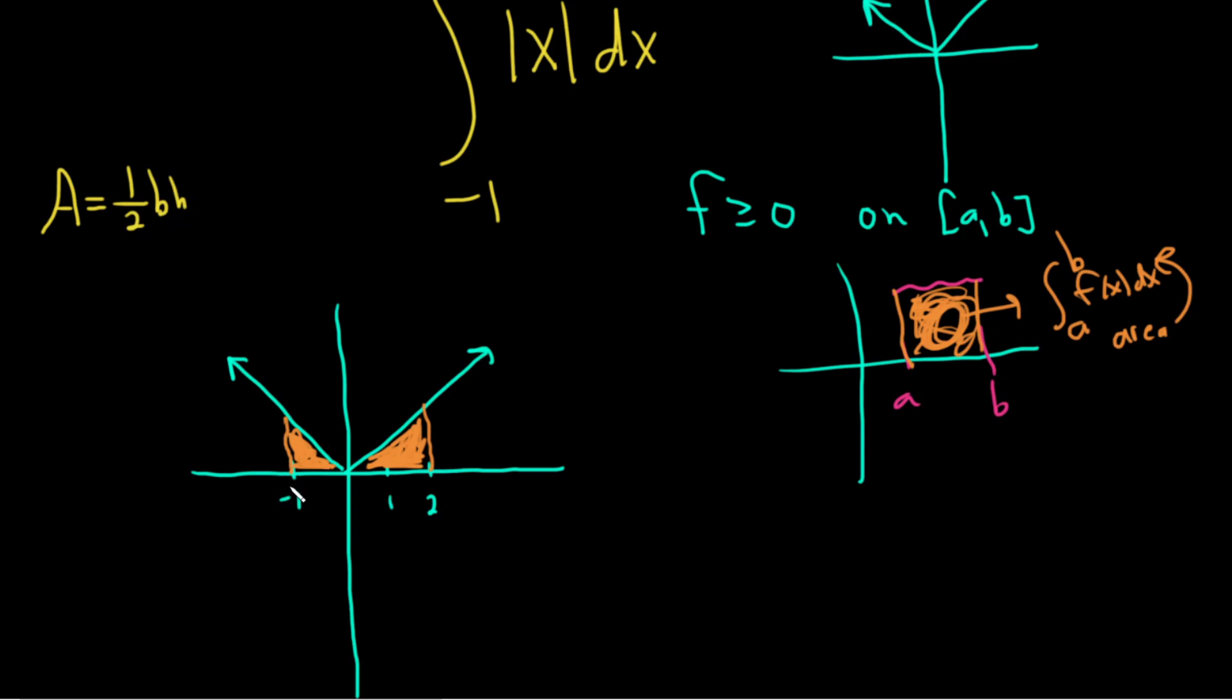So for this first triangle over here on the left, the base is simply one, and the height is also one. So it will be one-half times one times one, which is just one-half. So this area here of this little triangle is one-half.